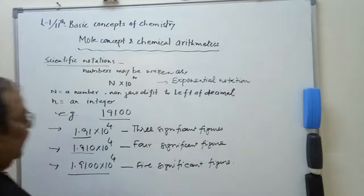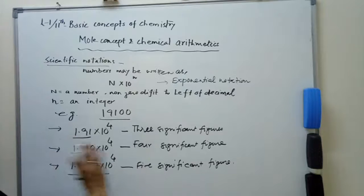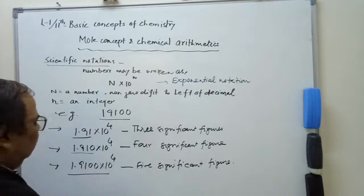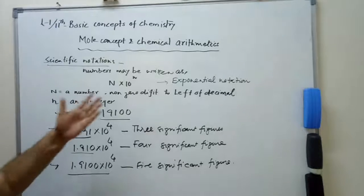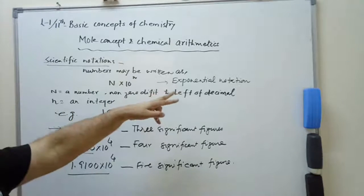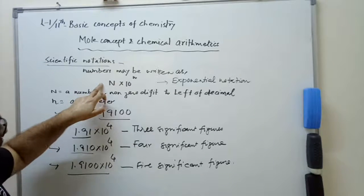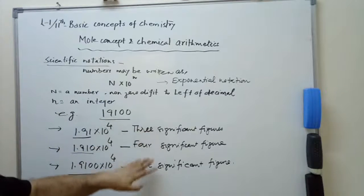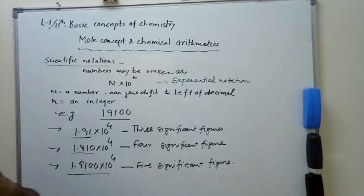For 1.9100 we have 5 significant figures. Note that leading zeros to the left will not be considered in the significant figure. So for 19100: 4 significant figures for the 4-digit form, and 5 for the 5-digit form.